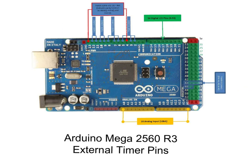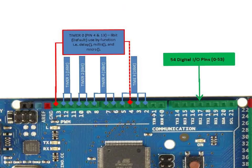The Arduino Mega 2560 R3 provides 6 timer functionalities. The Arduino board and software library use a default timer — Timer 0. Configured by default at pin 13 and pin 4, Timer 0 has 8-bit resolution and is used by the timing functions of the Arduino software library such as delay(), millis(), micros(), and delayMicroseconds(). Care must be taken when experimenting with Timer 0 to avoid undesirable outcomes.